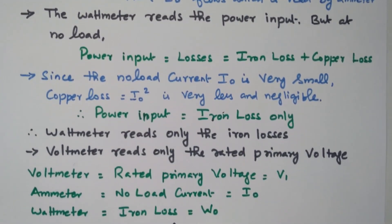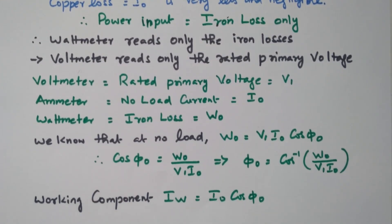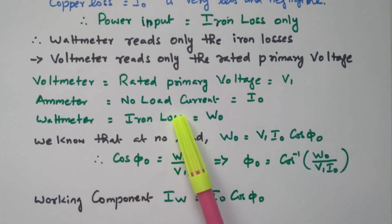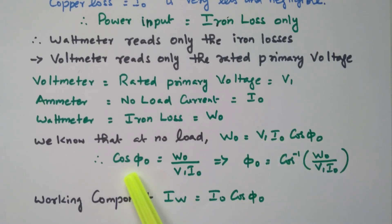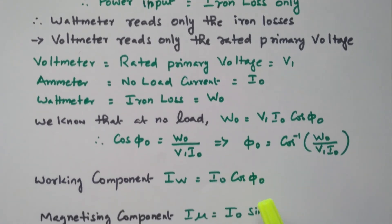From the instrument readings we can calculate I₀ and X₀. The voltmeter reads the primary rated voltage V1, the ammeter reads the no load current I₀, and the wattmeter reads the iron loss W₀. W₀ equals V1 · I₀ · cos φ₀, so cos φ₀ equals W₀ divided by V1 · I₀. The phase angle φ₀ between V1 and I₀ is then calculated as cos⁻¹(W₀ / V1 · I₀). From this we obtain the phase angle between current and voltage.